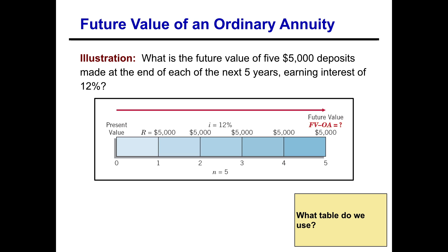Let's look at an example: what is the future value of five $5,000 deposits made at the end of each of the next five years, earning interest of 12 percent? Even without the slide title, we'd know this is an ordinary annuity because the payments are at the end of each period and are equal amounts. Since they're asking what we'll have at the end of five years, we know it's a future value question.